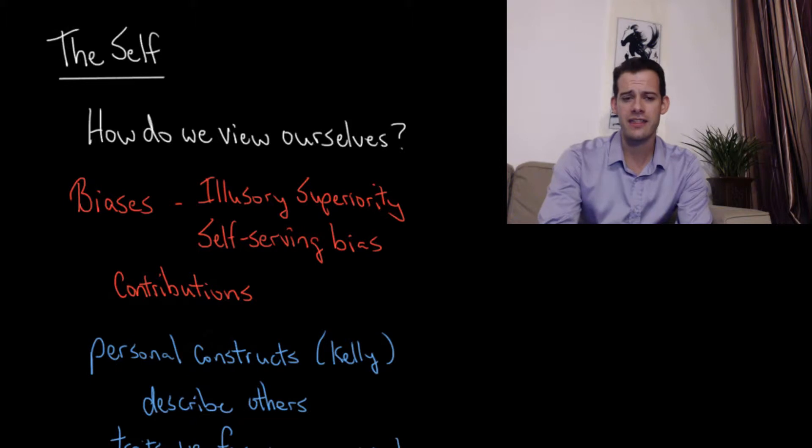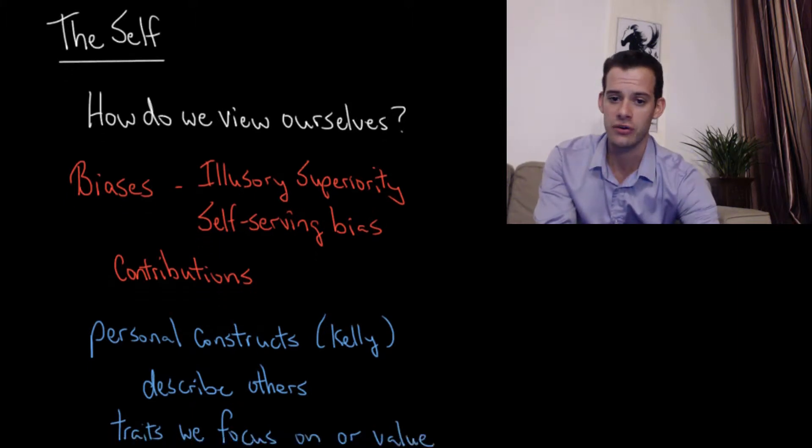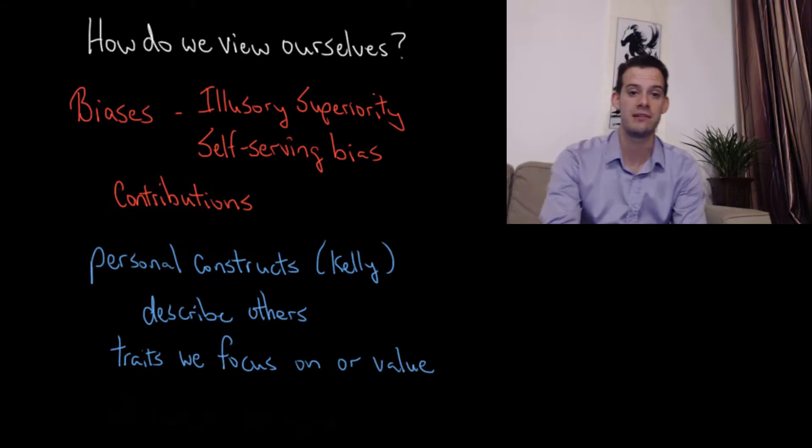So one way that we can think about how people view themselves is actually to ask about other people. So this brings us back to the idea of personal constructs from George Kelly that I talked about in a previous video. So these are the schema that we build up about how the world works and how we view the social world. And one thing that we can do is rather than asking people about themselves, we ask them about other people. So we ask them to describe others because their own biases might influence their reports about themselves.